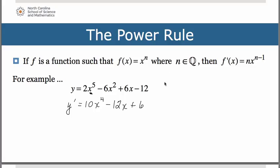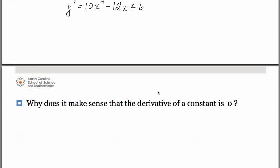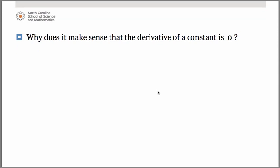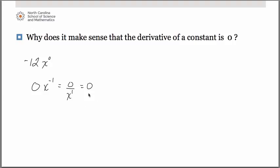Let's talk about why the constant term — when we took the derivative of that minus 12 — came out as 0. A constant term has no x attached to it; you could think of it as x to the 0 power, and x to the 0 is 1, so really you just have minus 12. Apply the power rule: negative 12 times 0 is obviously 0. You'd have x to the negative 1, which is 0 over x to the first — and 0 over that is just 0, assuming x is not 0 itself.